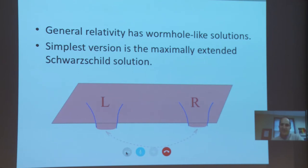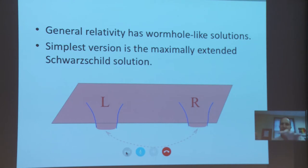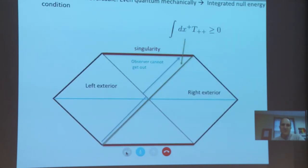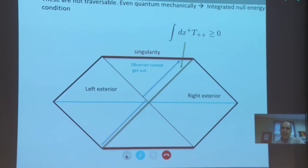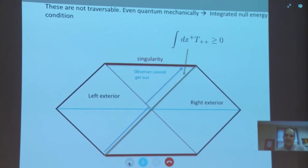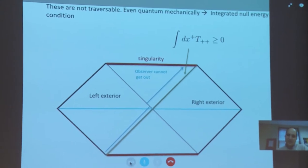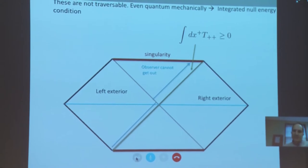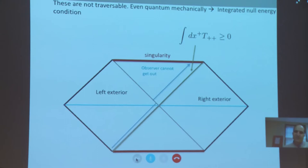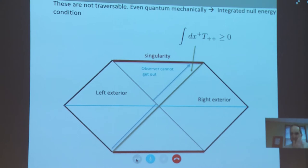We all know that general relativity has wormhole-like solutions. The simplest version is the maximally extended Schwarzschild solution, which has two asymptotic regions. There is a closely related solution where two asymptotic regions represent two far-away regions in the same spacetime. All such wormholes in general relativity are not traversable — even accounting for quantum mechanical corrections, you cannot send signals from one side to the other. This is related to the fact that the integrated null energy condition holds: the integral of T_{++} along null rays is positive.